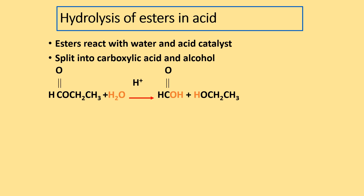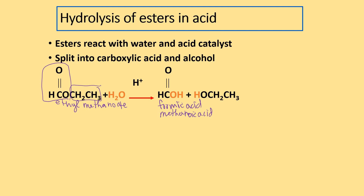We already did this one — hydrolysis of esters in water and acid was the same as how to make an acid. When you hydrolyze an ester in water, you get a carboxylic acid and an alcohol. It's the reverse of Fischer esterification. Notice this was ethyl methanoate, also called ethyl formate, and you get formic acid, also known as methanoic acid. So the ester turns back into an acid, and the R turns into the alcohol.